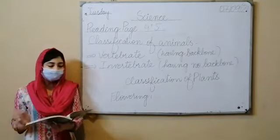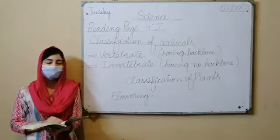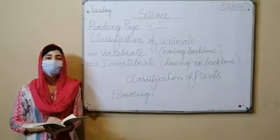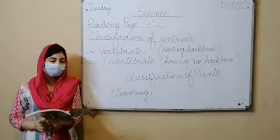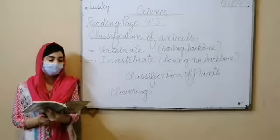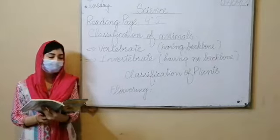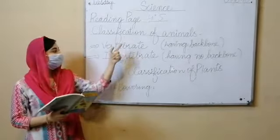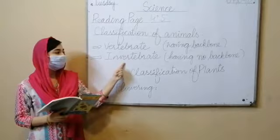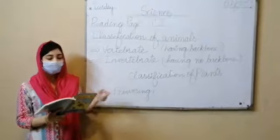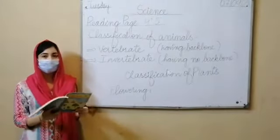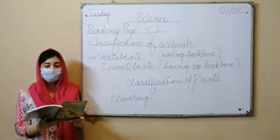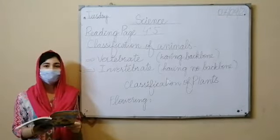In the last lecture, we were reading phase number 3. Today we will be reading phase number 4 and 5. In phase number 4, our topic is classification of animals — we will study vertebrates and invertebrates. In phase number 5, our topic is classification of plants — we will study flowering plants and non-flowering plants.